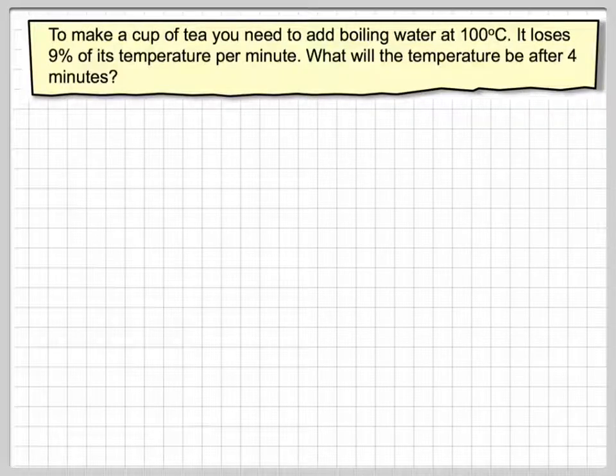In this video we're going to look at a compound percentage where we have a continued decrease. To make a cup of tea you need to add boiling water at 100 degrees C. It loses 9% of its temperature per minute. What will be the temperature after 4 minutes?